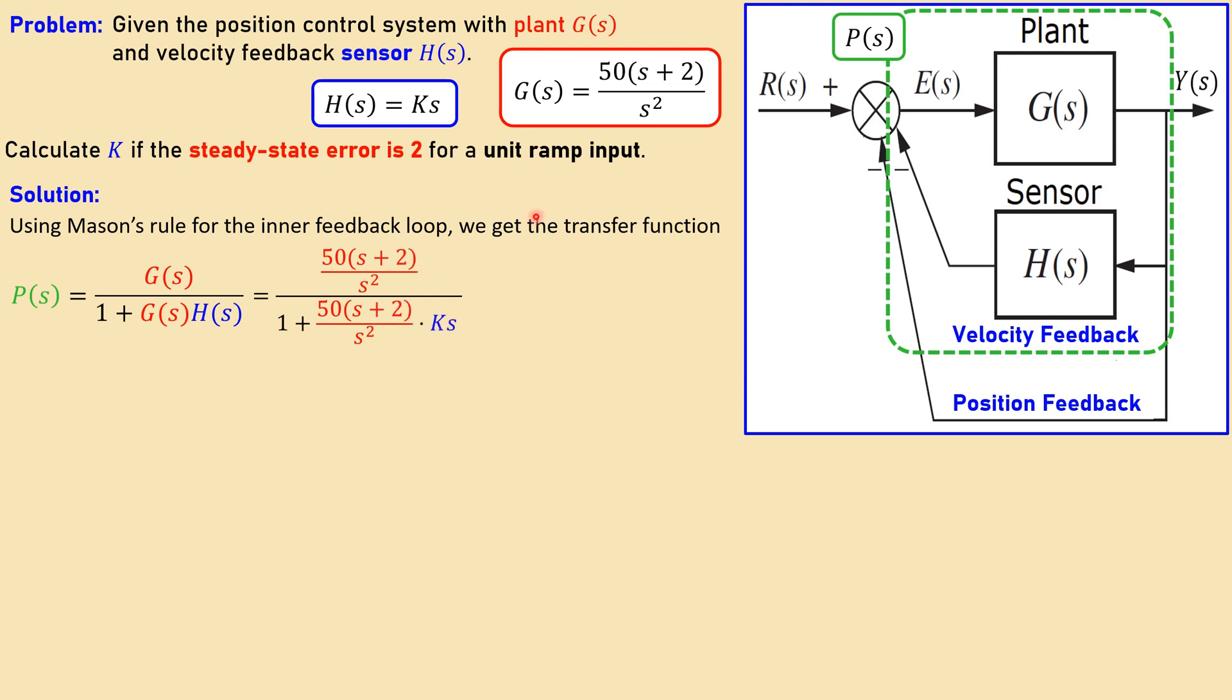That's actually shown here. Now if I now substitute everything I have from this example, I have this given here in red for the plant and blue for my sensor H. Then I have after simplification this transfer function, which is again a second order. So P is this expression.